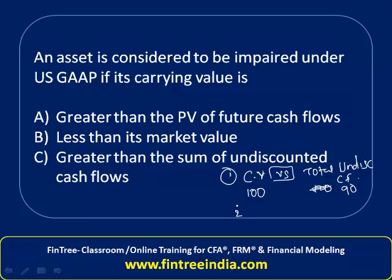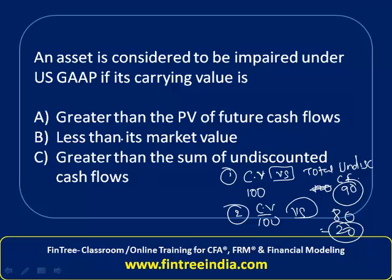In step two, we calculate the impairment loss by comparing the carrying value versus the total of discounted cash flows. For example, if the present value of all future cash flows comes out to be 80, that gives us an impairment loss of 20, and therefore the asset is impaired. If the firm's carrying value is greater than the sum of undiscounted cash flows, the answer is option C.